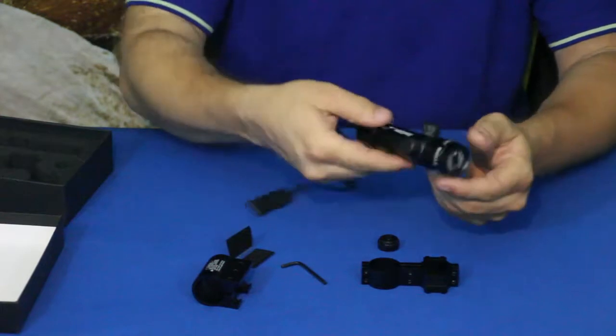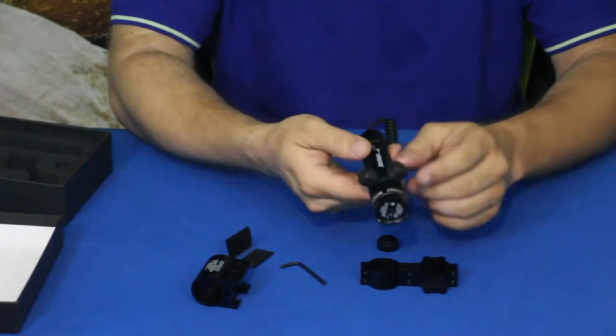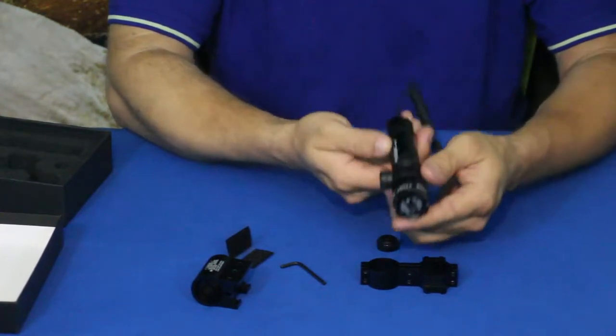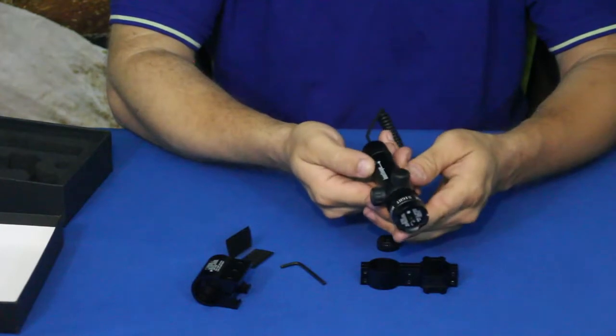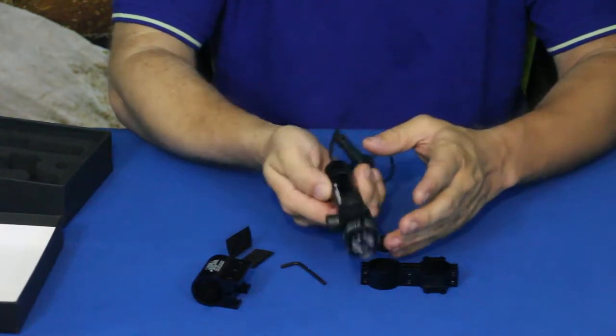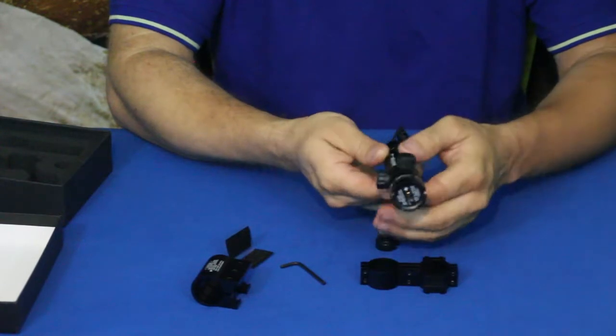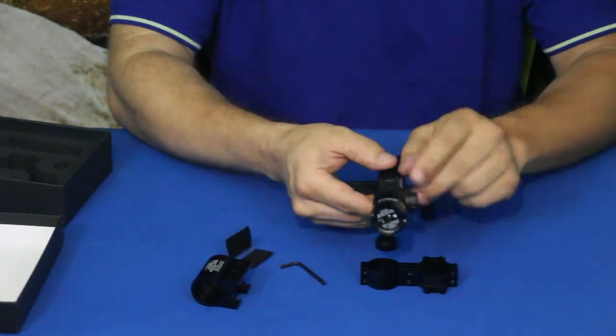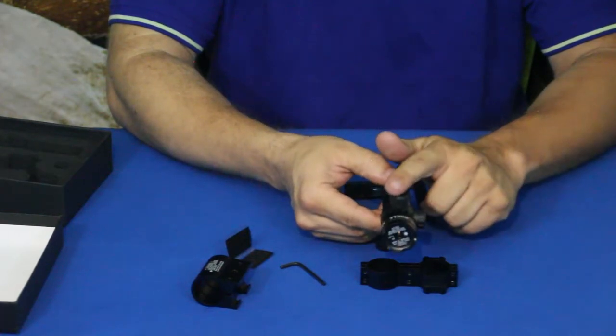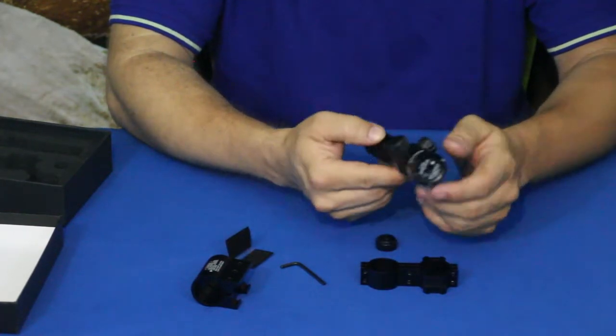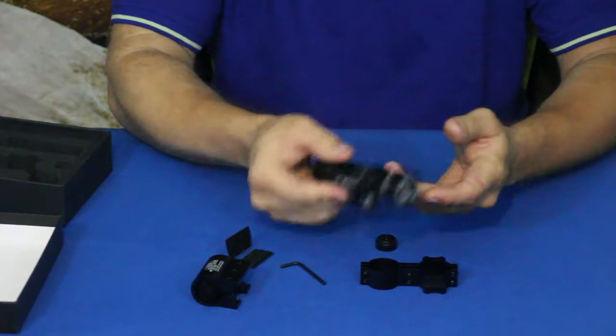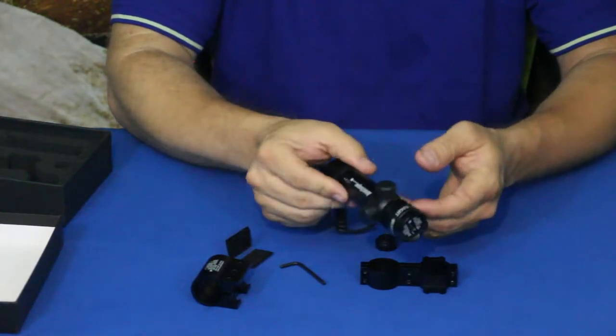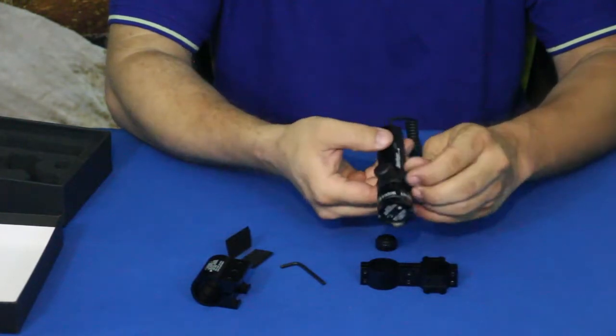Once you mount it, you can do your adjustments depending on which way you turn it. If you have it mounted on the right hand side, this will be your elevation and this one will be your windage. If you have it mounted on the left hand side, this one will be your elevation and this one will be your windage. It depends on which way you have it mounted.